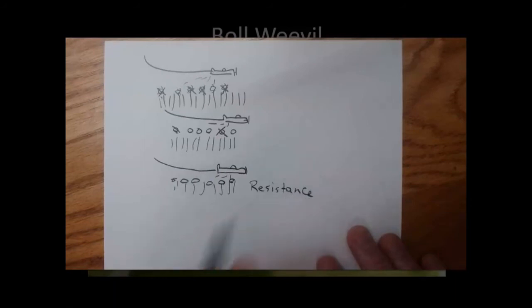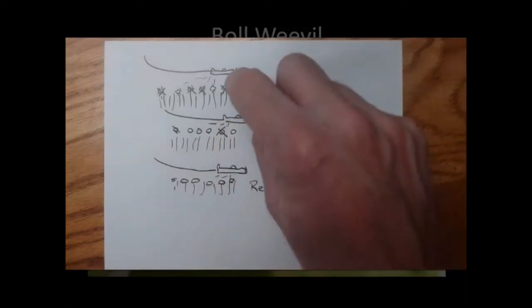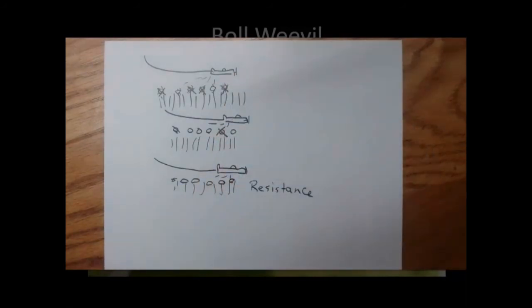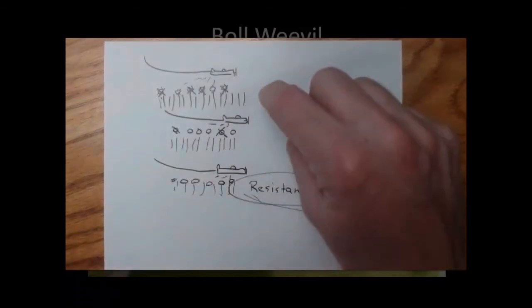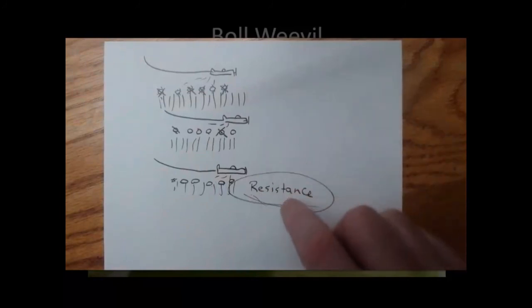The same thing can happen, by the way, to bacteria with antibiotic medications. The same thing happens with multiple different types of insects. The mosquito is another really good example. The aphid is another one. This concept of developing resistance—remember, it happens generation after generation.